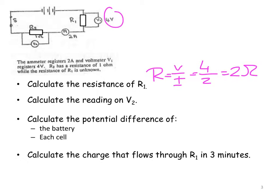Calculate the reading on V2. I know that I have got a current strength going through a 1 ohm resistor, so V is equal to I times R. The current is 2. The resistance is 1, so I land up with 2 volts, so that's 2 volts over there.